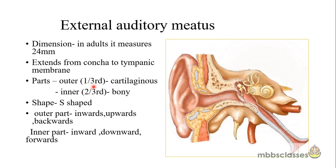The external auditory meatus, sometimes called the external auditory canal, starts from the concha. It is an S-shaped tube and it ends at the tympanic membrane. One end is open and the other end is closed — the closed end is the medial end, which is formed by the tympanic membrane. In an adult person, the length of the external auditory meatus is approximately 24 mm.